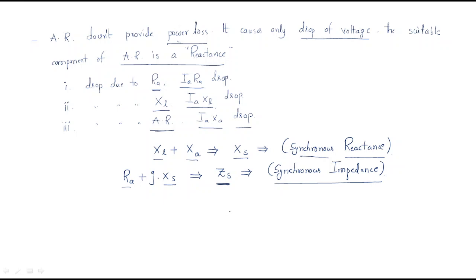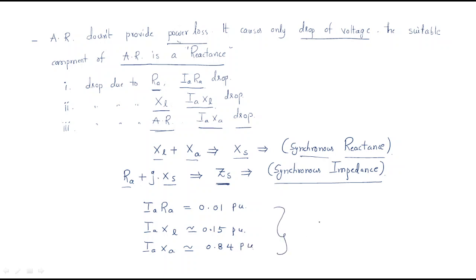We can assign per-unit values for these drops in a synchronous machine. The resistive drop ia·Ra is approximately 0.01 per unit, the leakage reactance drop ia·Xl is 0.15 per unit, and the armature reaction drop ia·Xa is 0.84 per unit. The combination of all these gives ia·Zs approximately equal to 1 per unit.